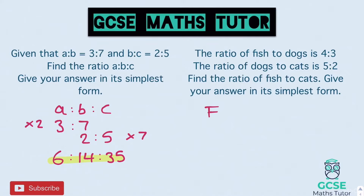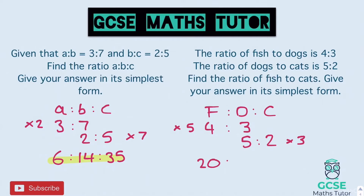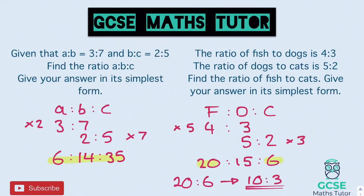On to the next one — fish to dogs to cats. We've got 4 to 3 on the first ratio and 5 to 2 on the next one, so again we have a three and a five. Times this to make 15: times the top by five, the bottom by three, giving 20 to 15 to 6. The question says find the ratio of fish to cats: fish is 20, cats is 6, so 20 to 6. Dividing both by two gives 10 to 3 — our final answer.